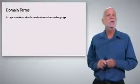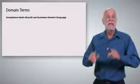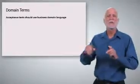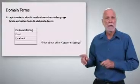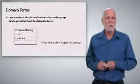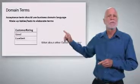Now you'll notice that in our test we use domain terms. An acceptance test should use the business domain language. Not answer doubles, but dollars and percentages and anything else like that. And in order to show that we understand the terms, we're going to make up a table or test to elaborate them. For example, in our customer rating, we can make up a table that simply says there are good and excellent customers.